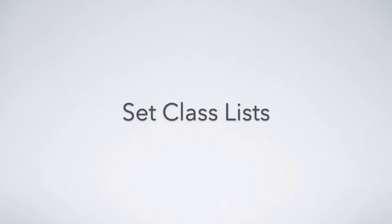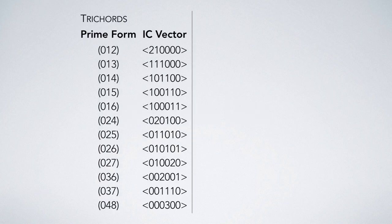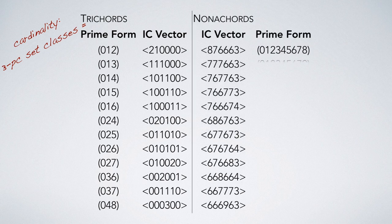Fortunately for us, we don't need to create such a list because others already have. Most of these set class lists are organized similarly. Set classes that have the same number of notes in them, the same cardinality, are grouped together. Trichords are listed together, as are nonachords and so on.